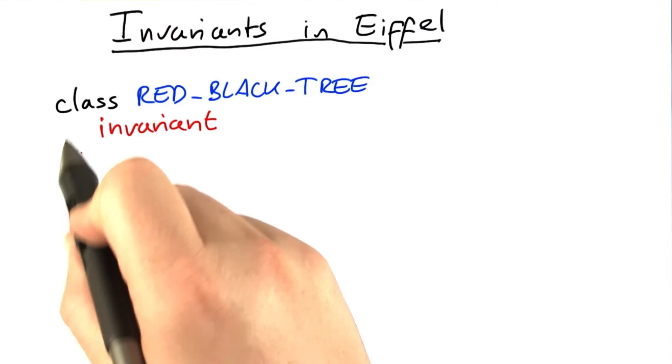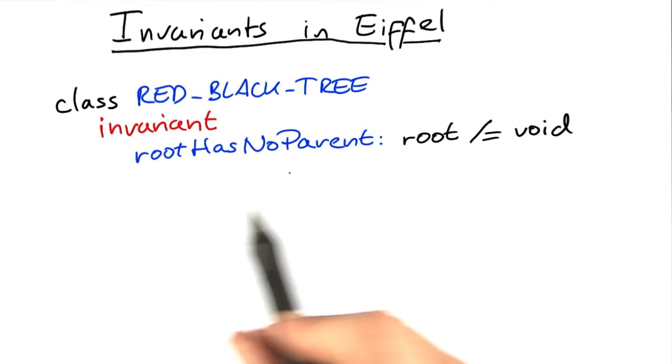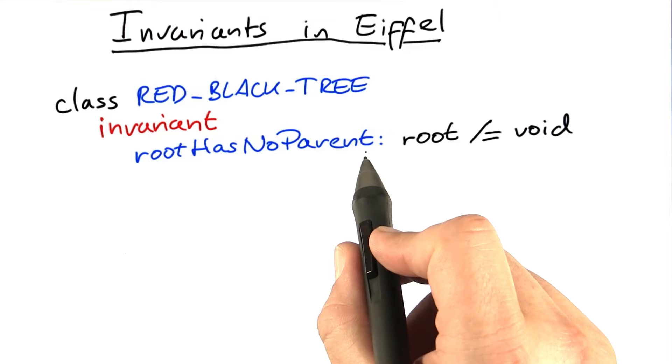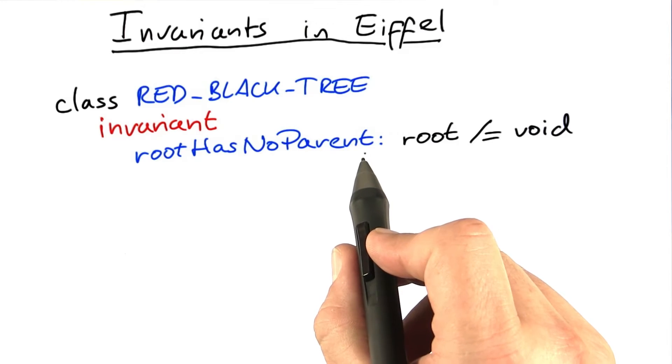In Eiffel, invariants become part of the classes. The invariants also are named. So if an invariant is violated, the name of the invariant becomes part of the diagnostic message.